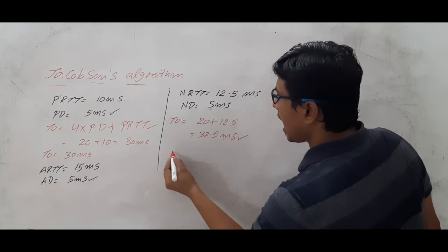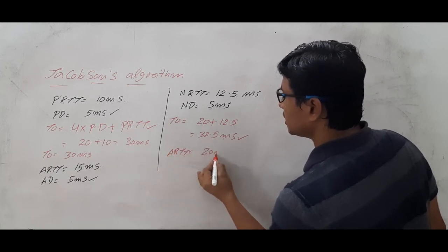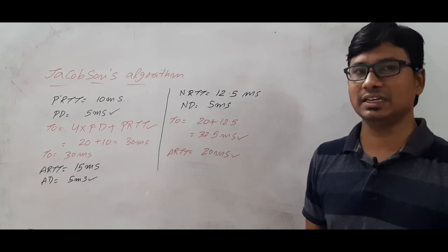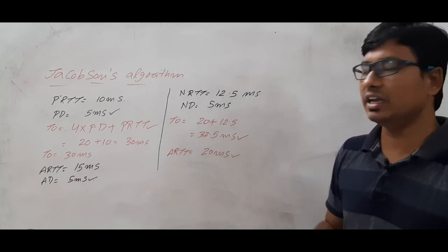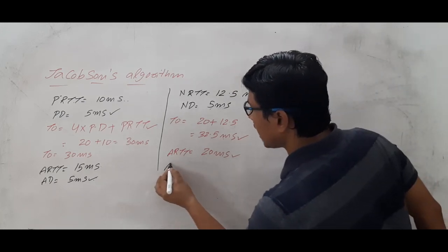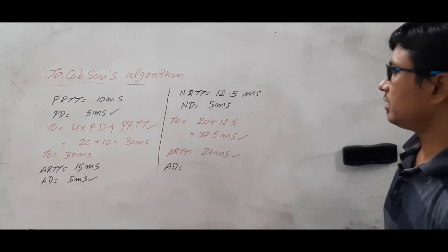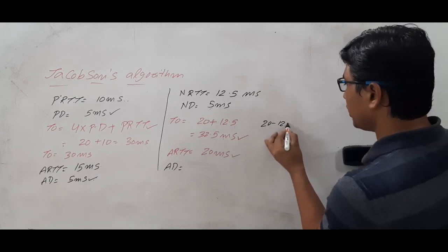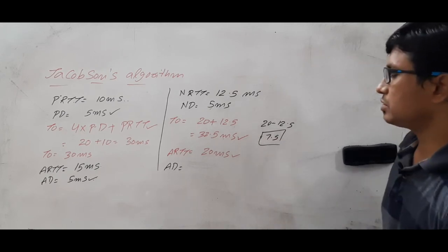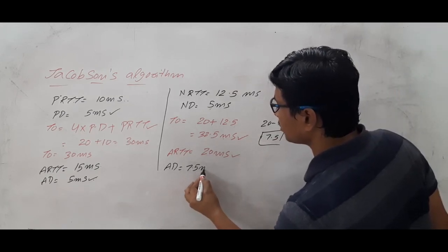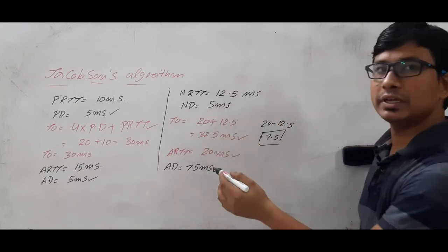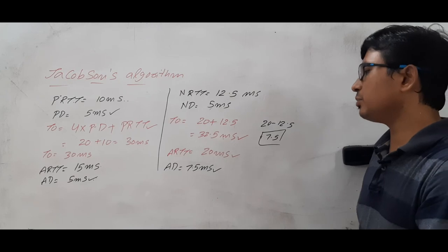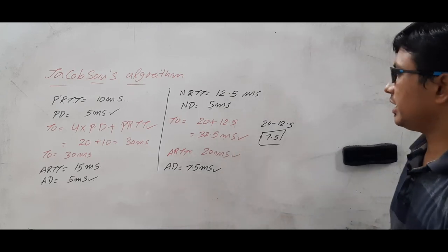Suppose the actual round trip time for this segment became 20 milliseconds. You guessed it would come in 12.5 milliseconds but it came in 20 milliseconds, again delayed due to some congestion. The actual deviation is 20 minus 12.5, which equals 7.5 milliseconds. You had predicted it would come in 7.5 or 17.5 milliseconds, but it came in 20 milliseconds.